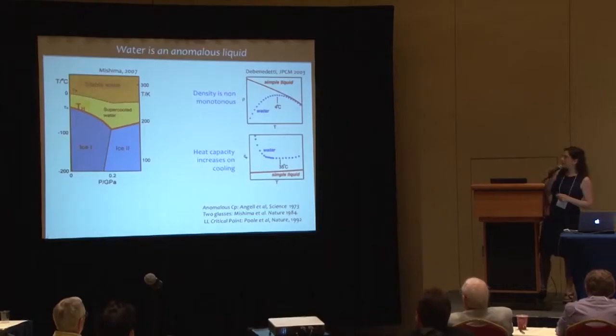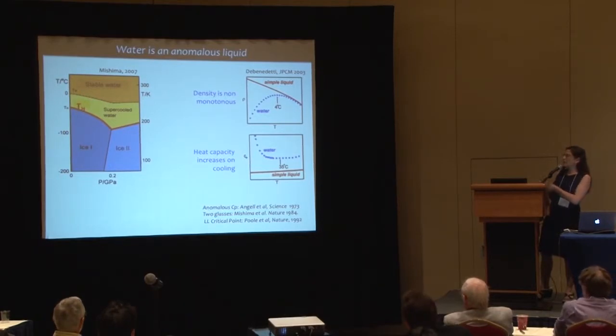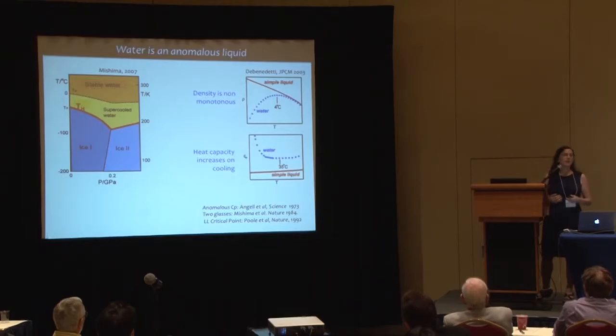What is interesting is that the temperature at which the heat capacity would diverge, and also the compressibility would be huge, is almost exactly the same as the temperature of homogeneous nucleation of ice. So the anomalies in liquid water are such that when you try to understand their origin, you find that ice is going to crystallize.